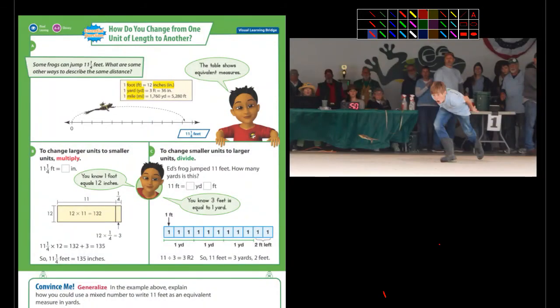Hey 5th graders! Here is, what is this? This is 12-1. What page is this? This is page 490 and the first thing it's talking about is some frogs can jump 11 and a quarter feet.